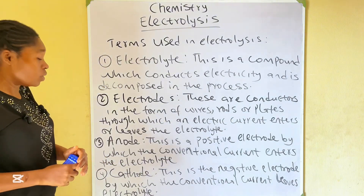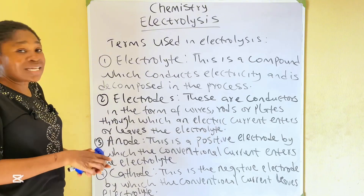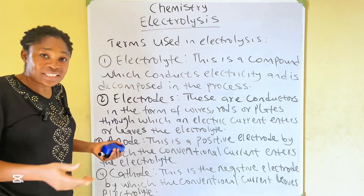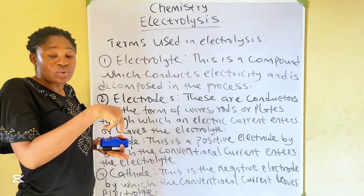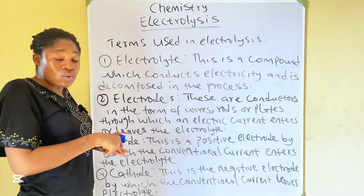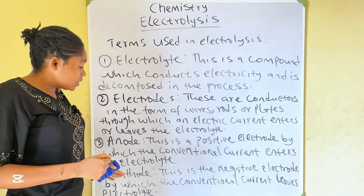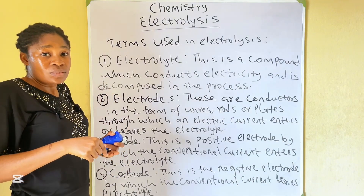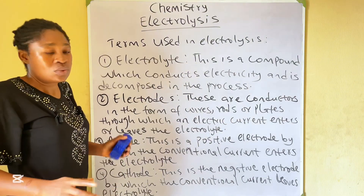Let's not confuse you. For the anode: current enters the electrolyte through the anode, and electrons leave through the anode. For the cathode: current leaves through the cathode, and electrons enter through the cathode.